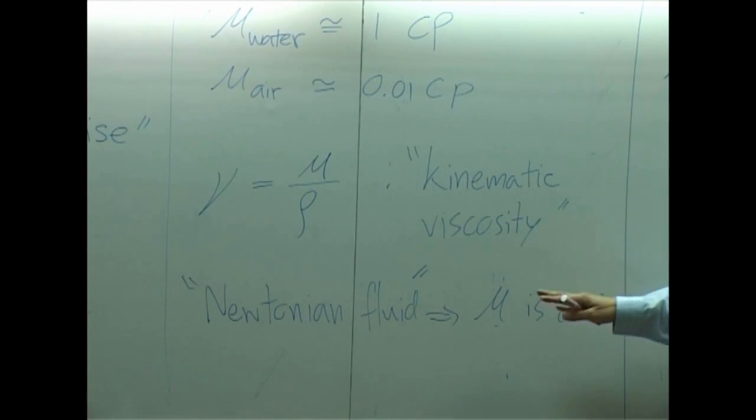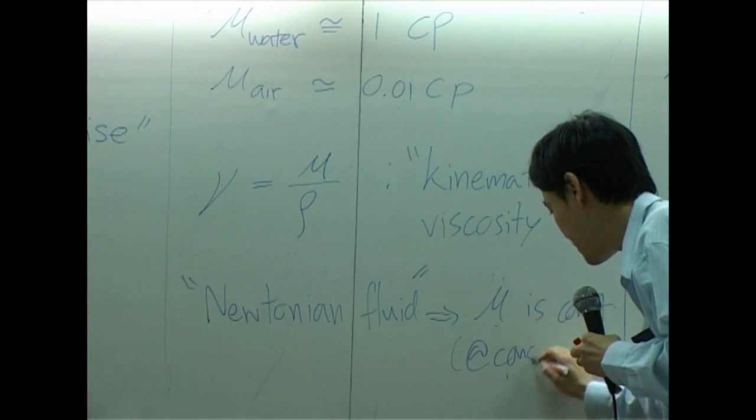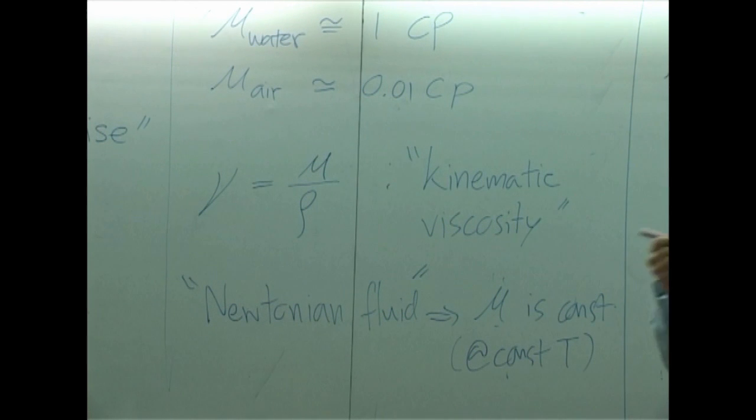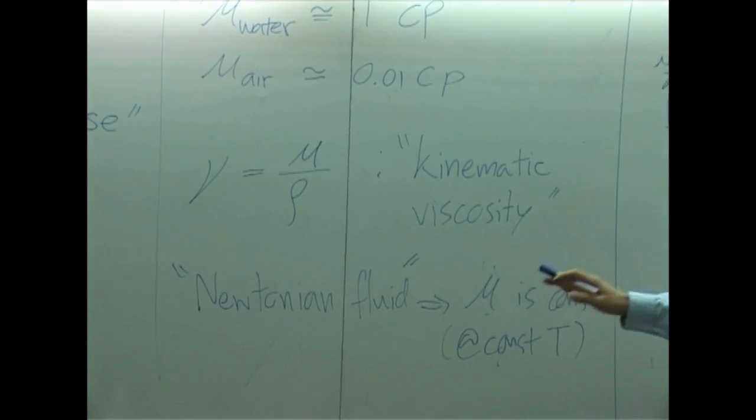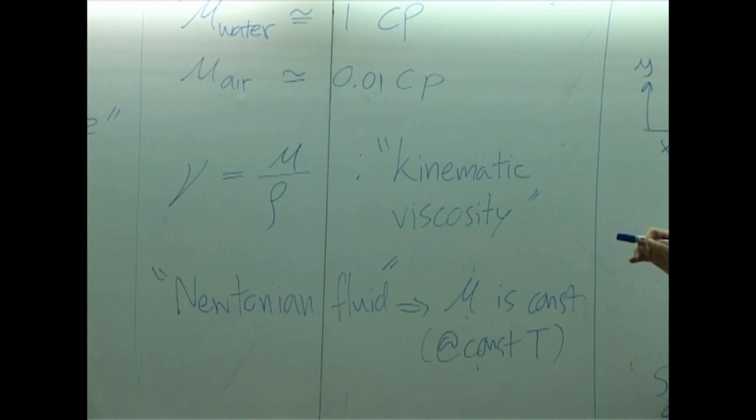If viscosity is not constant at one particular temperature, this is considered at constant temperature. For one particular temperature, if viscosity is constant, it's called Newtonian fluid. But there are fluids that can be changed even though you keep the same temperature.